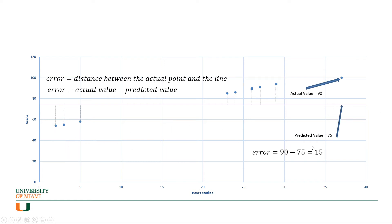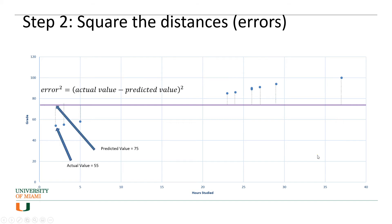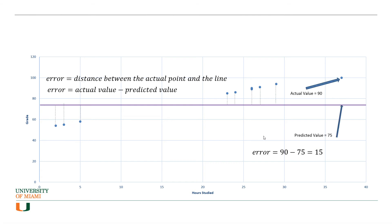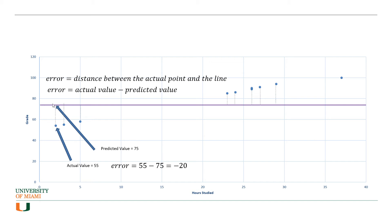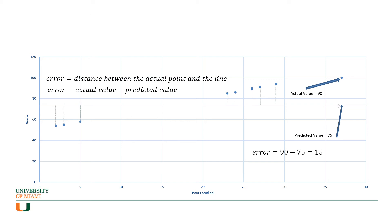You can do this for all the points. For the very last point, the error would be actual value 90 minus predicted value 75, which equals 15. Notice that when you overestimated the grade — actual was 55 but you predicted 75 — the error is negative. Whereas when you underestimated — actual was 90 but you predicted 75 — you get a positive error. So here it's negative 20, and there it's 15.